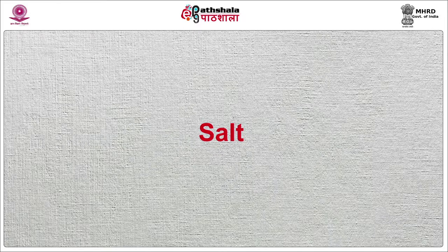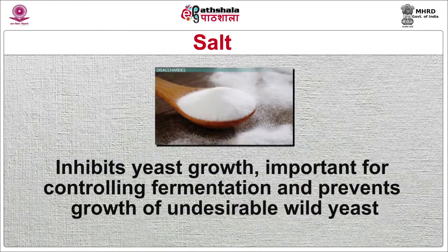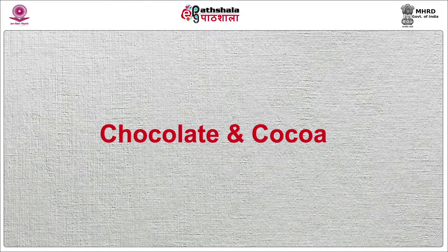Now I will discuss about salt. Salt enhances flavour. It also strengthens the gluten structure and makes it more stretchable. It also helps in improving the texture of breads. It inhibits yeast growth, which is important for controlling fermentation, and prevents growth of undesirable wild yeast. Now, chocolate and cocoa — derived from cocoa beans, these are high in starch, and when added to the formula it is sometimes considered part of the flour proportion. Spices used in bakery are cinnamon, nutmeg, mace, ginger, cardamom, allspice, aniseed and poppy seeds. They are used in small quantities.